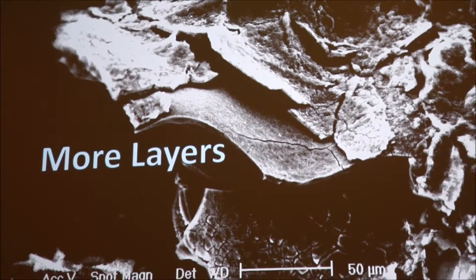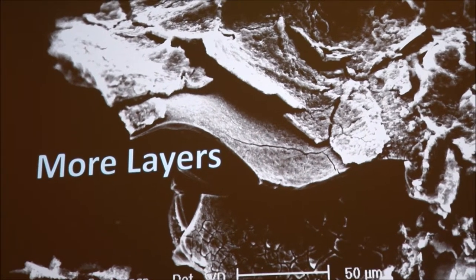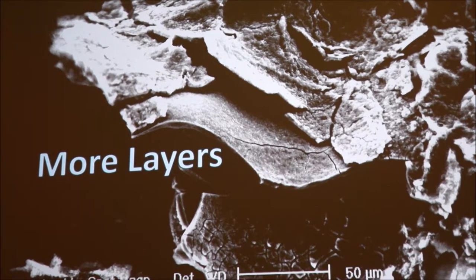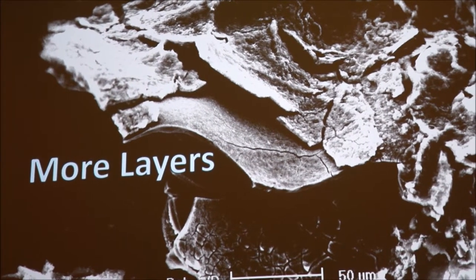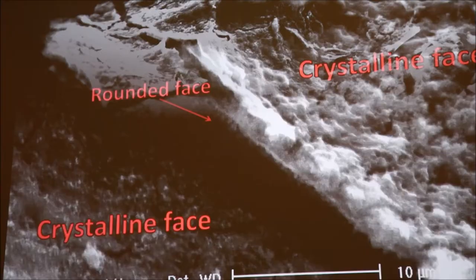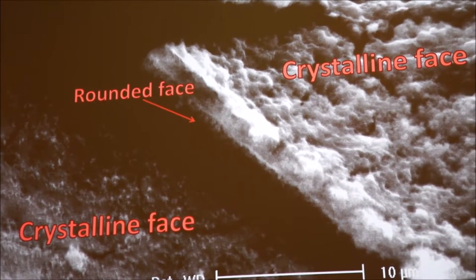Here's another picture of a bunch of layers. All those little cracks in there are probably just due to the vacuum in the ESEM, so I don't think those are actually part of the chimney itself initially.